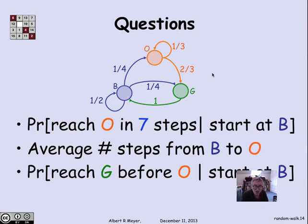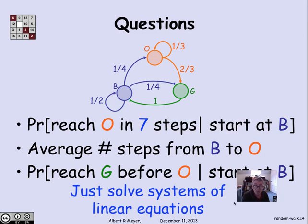So looking back at our questions for random walks, where we ask whether the probability of reaching O in seven steps starting at B, what's the probability of that? What's the average number of steps to go from B to O? What's the probability of reaching G before O starting at B? In every case, these questions can be formulated simply as solving systems of linear equations whose structure directly reflects the structure of the digraph.